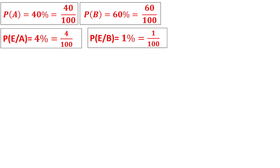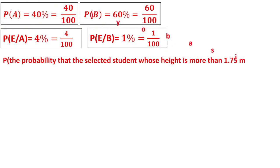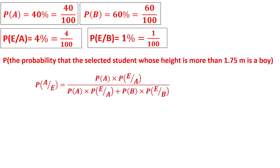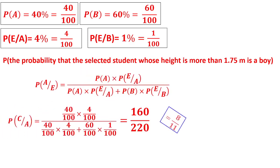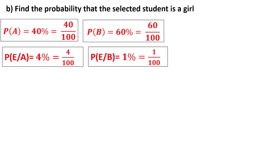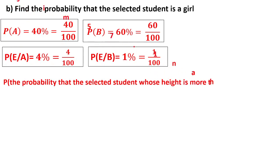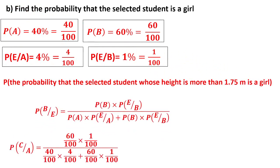Using Bayes theorem, find the probability that the selected student whose height is more than 1.75 meter is a boy. P(A|E) formula is known to you. Substitute all the values and you will get 8/11. The probability that the selected student whose height is more than 1.75 meter is a girl is P(B|E). Therefore you got the answer as 3/11.